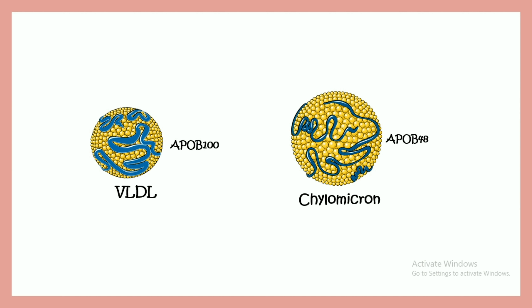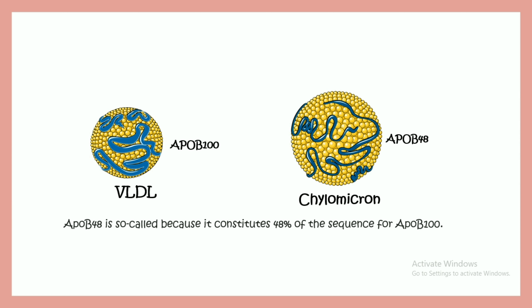One protein component is apolipoprotein B. ApoB100 is found in VLDL, whereas ApoB48 is found in chylomicron. Chylomicron is secreted from the intestine, whereas VLDL is secreted from the liver. ApoB48 simply means it is just 48 percent of the sequence of ApoB100.